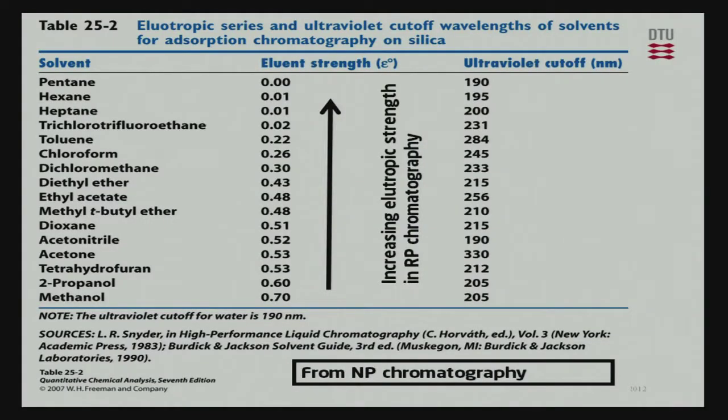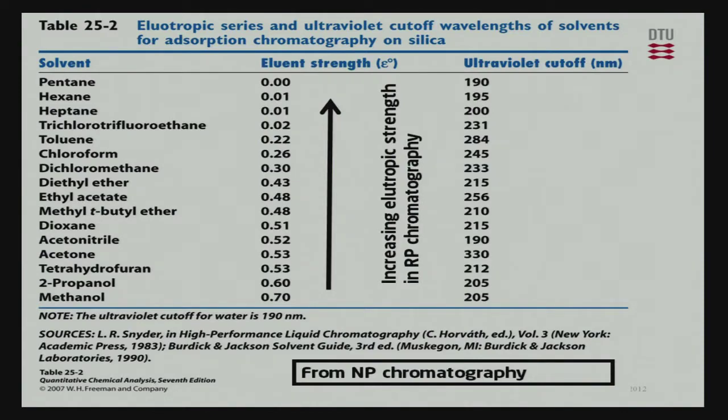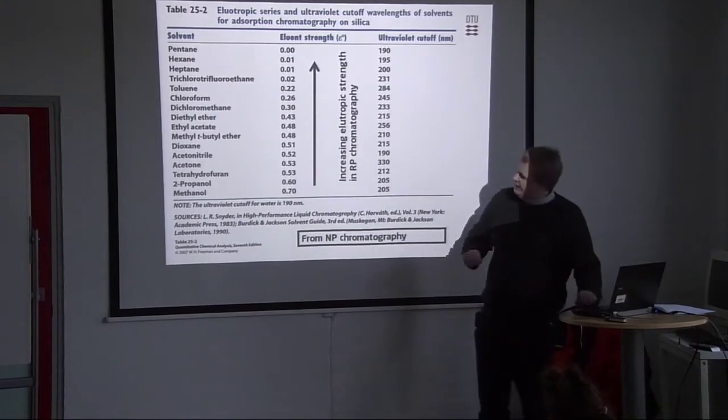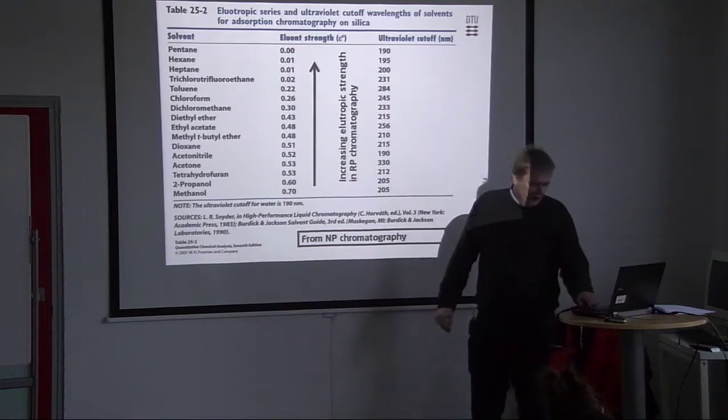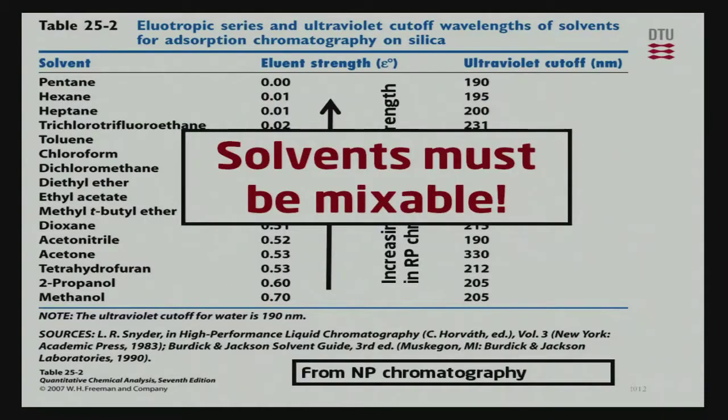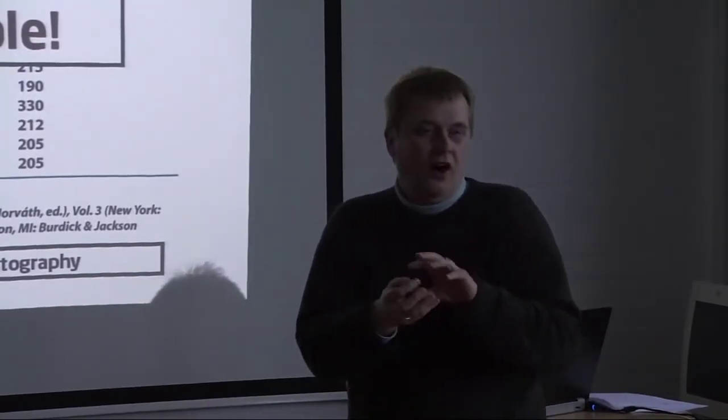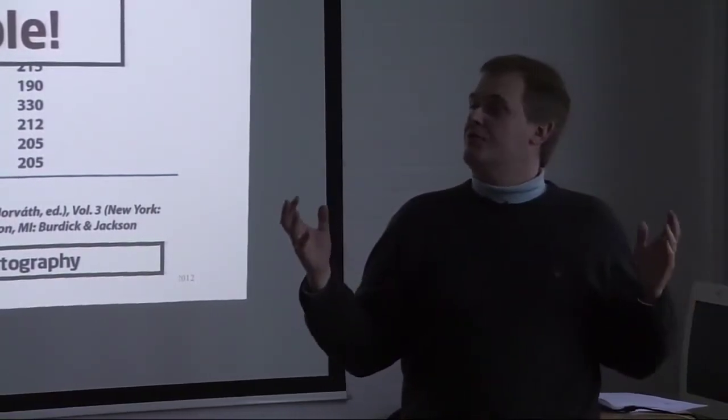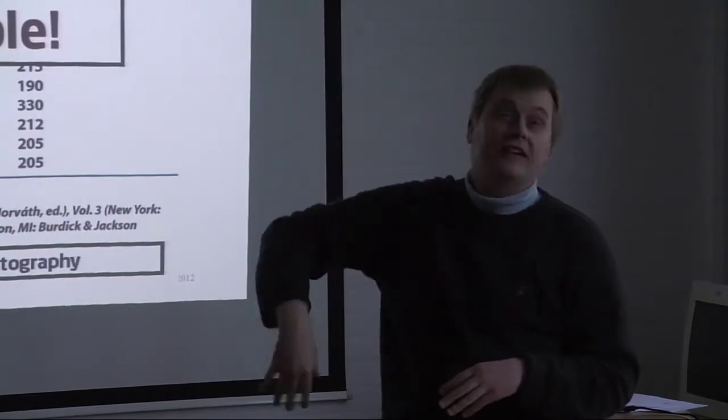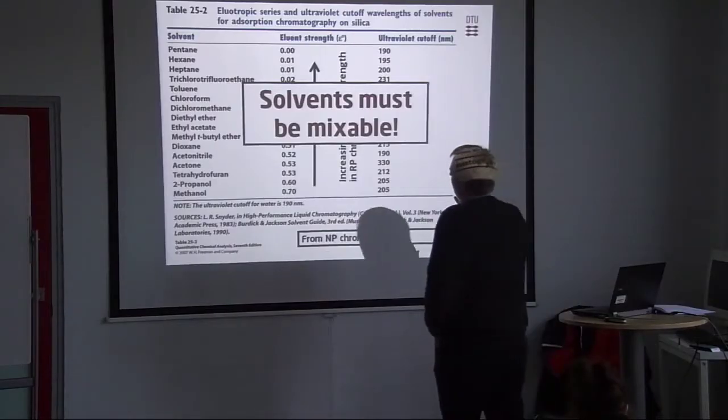So we have this slide on the eluotropic strengths, and usually they come from normal phase, so it also means that the higher, the less retentive they are, and usually we are down here with water. What is very important when we do HPLC, and this goes for any kind of chromatography in this world, is that we do mixtures of solvents, they have to be mixed. So we cannot take hexane and water, because they create a two-phase system.